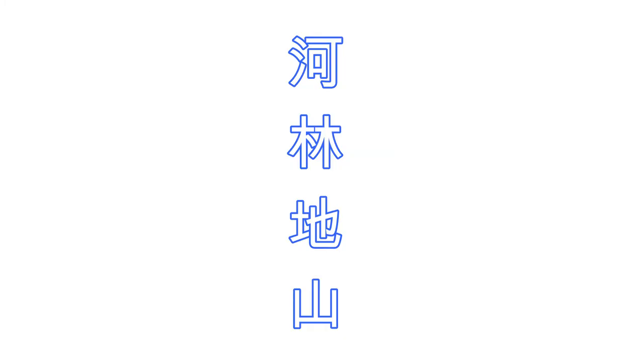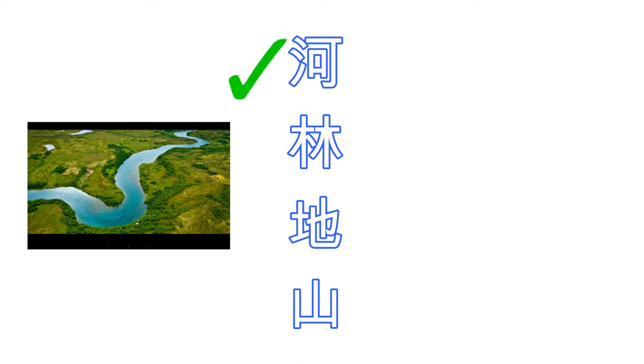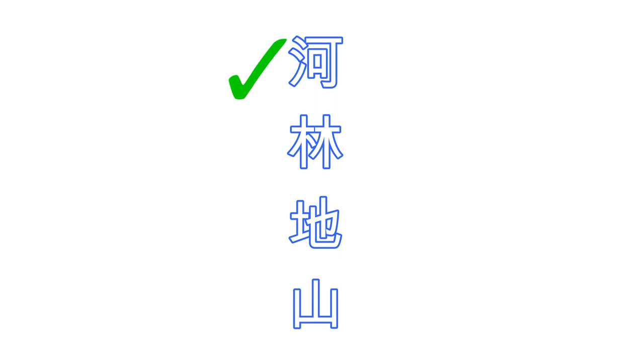Now let's learn our first radical: 水 (shui). 水 means water or liquid. As you can see, it looks like three drops of water, written in three strokes. This radical means water or liquid. So if I give you four characters and ask you to pick the one that means 'river,' you can guess — it's this one, the first one, because it has the water radical 水, and obviously a river is related to water.